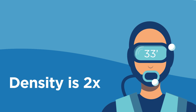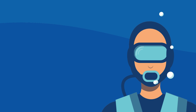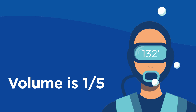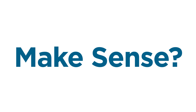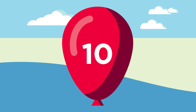This relationship continues as you dive deeper, all the way down to 132 feet. At five atmospheres, the volume is one-fifth of what it was on the surface, and the density is five times denser. Think about it this way: if you had a balloon at the surface with a volume of 10 units, taking it down to five atmospheres would reduce the balloon's volume to two units, because at 132 feet, the volume of an object is one-fifth of what it was on the surface.